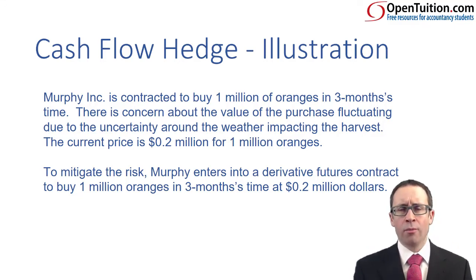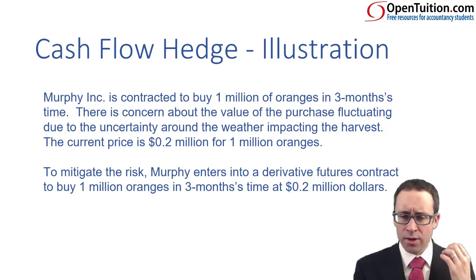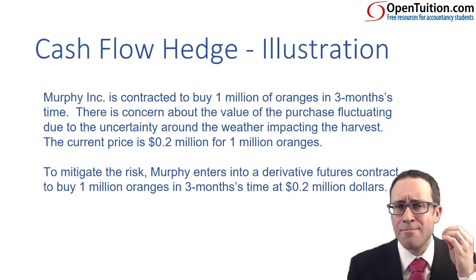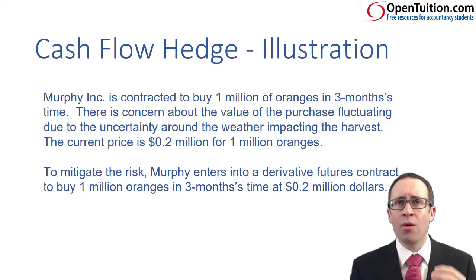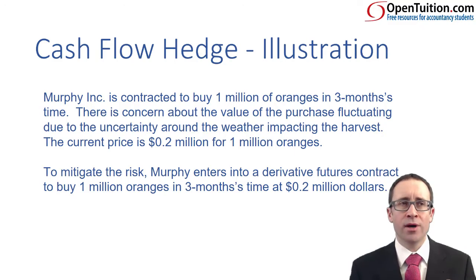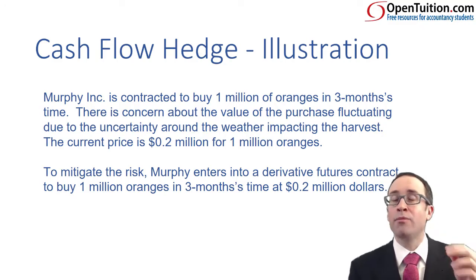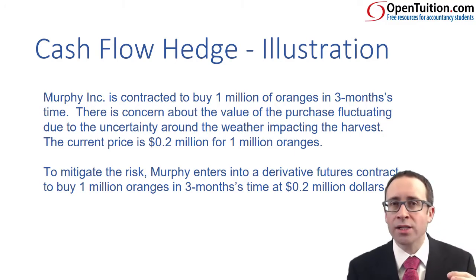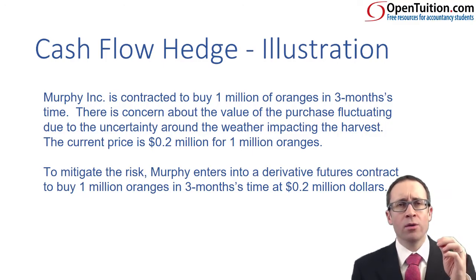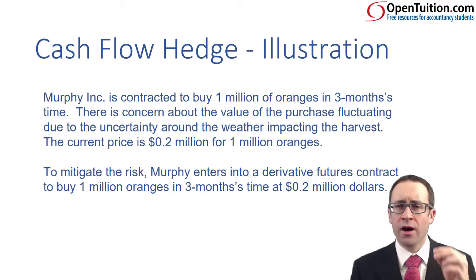Currently the oranges are at $0.2 million, so we enter into a futures contract. The future here is that we place a bet on our fear. We have a fear of an increase in price, so we place a bet saying that the price will rise. When you're looking at your derivative, you bet on your fear.